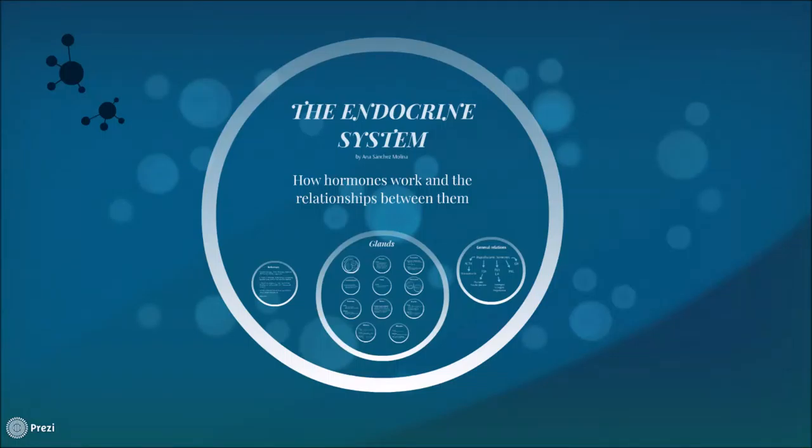The endocrine system is a collection of glands that are in charge of the production of hormones. These hormones are substances released by cells in those glands and they trigger different actions throughout our organism.